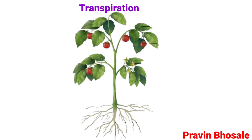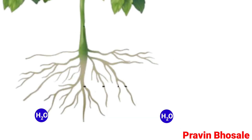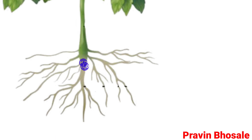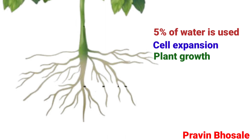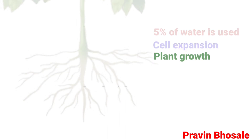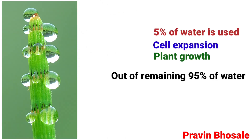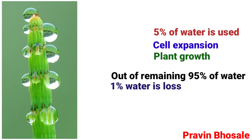Transpiration. Plants constantly absorb water from the soil. Of this, hardly 5% of the water is used by the plant for cell expansion and plant growth. Out of the remaining 95% water, 1% water is lost in the form of liquid.